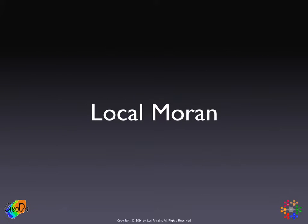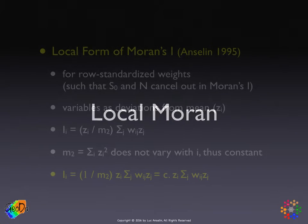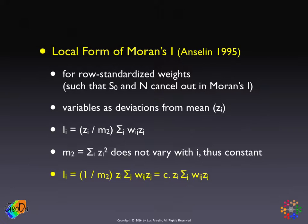The local Moran statistic. So what is the local form of Moran's I? When we look very carefully at the way the statistic is constructed, especially for row-standardized weights, we can discover that the global statistic is proportional to a sum of location-specific values.